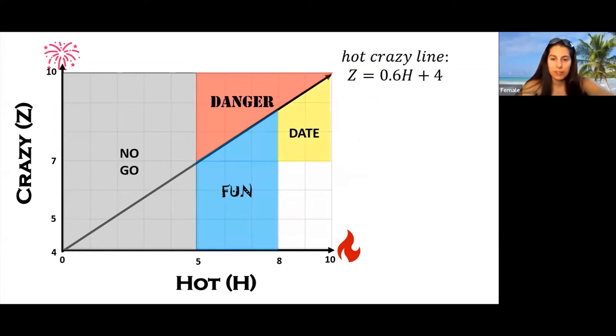Moving on to less crazy but more attractive women, we have the date zone. This is again below the crazy line, but not quite calm enough to settle down. So first we take the line equation and subtract the baseline of 7 crazy. Then we integrate this from the limits of 8 to 10 hot, and that area is the date zone.